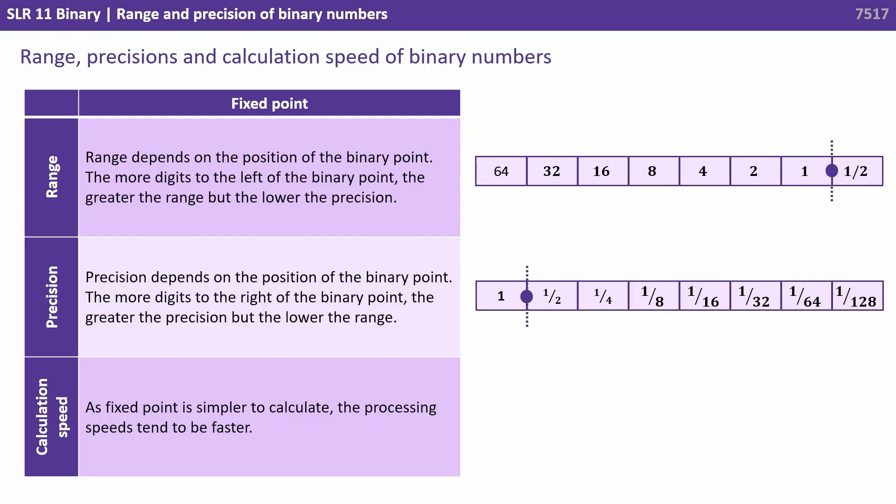With the fixed point representation, the range depends on the position of the binary point. The more digits to the left of the binary point, the greater the range but the lower the precision. The precision depends again on the position of the binary point. The more digits to the right of the binary point, the greater the precision, but at the cost of the range.